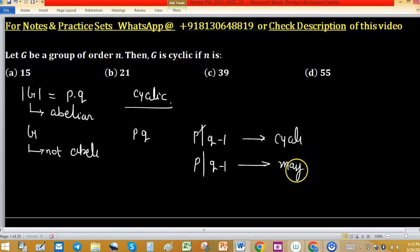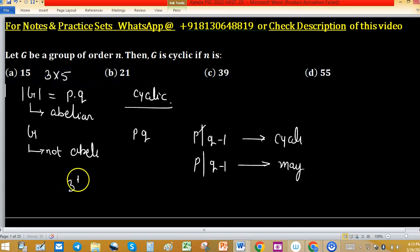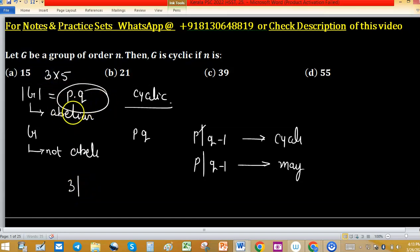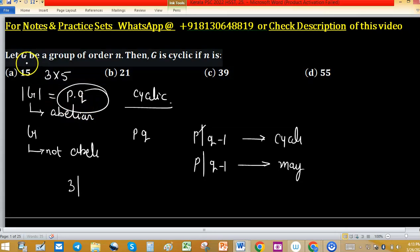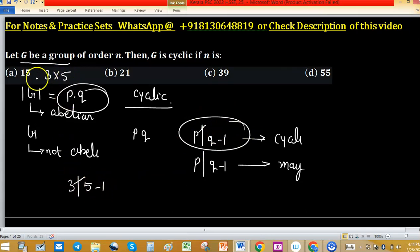In option A, 3 into 5 is the order. You can observe 3 and 5 are of the type pq. There is no specification about the group, so we will approach from this: 3 doesn't divide 5 minus 1, so the group will be cyclic in this order. Option B is 3 into 7...